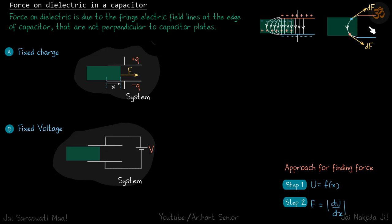Similarly, for all the negative charges they will be pulled toward the right. That is the reason for the force on the dielectric — it is due to the curved fringe electric field lines at the edge of the capacitor that are not perpendicular to the capacitor plates.